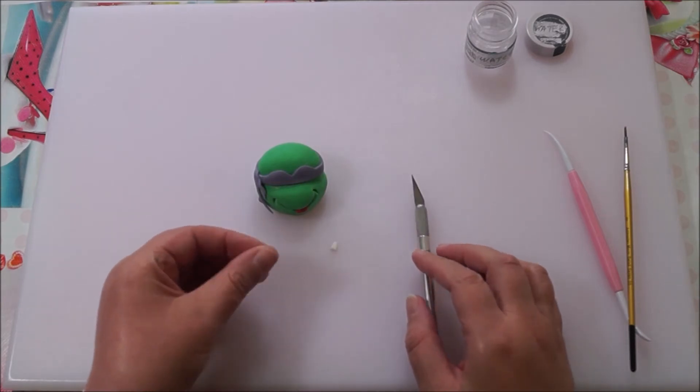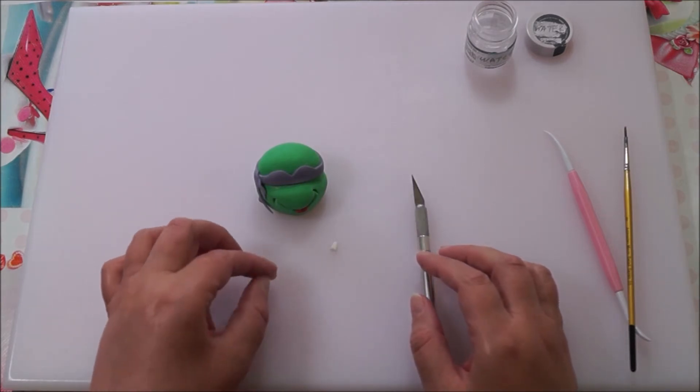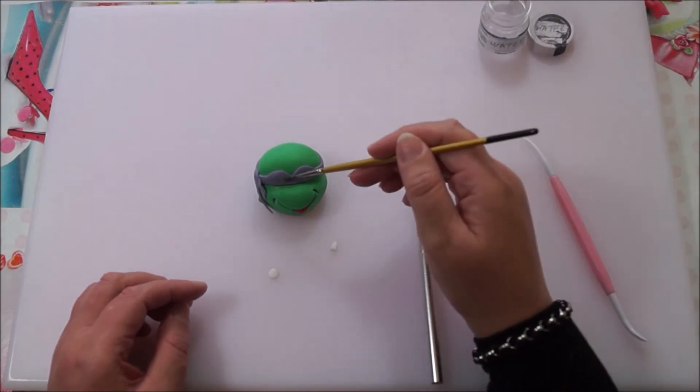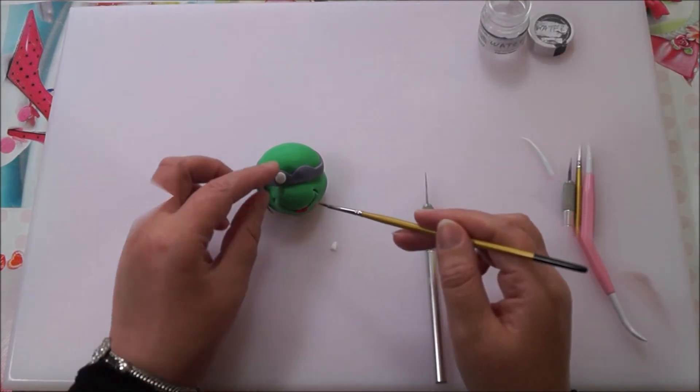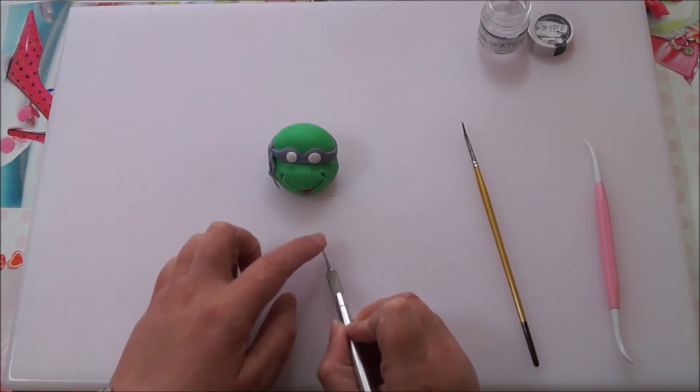Now I'm making the eyes. Get a piece of white fondant, cut it in half, and squash down the pieces to form circles and stick them on.